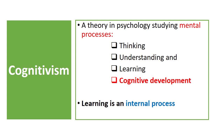Cognitivism is a theory in psychology that is concerned with the study of mental processes. Its main objective is to explain how humans think, understand, and learn. It also aims at identifying how such processes of thinking, understanding, and learning develop through human life.